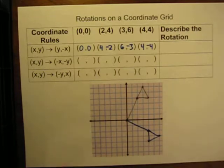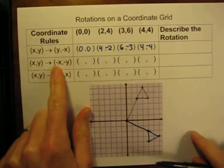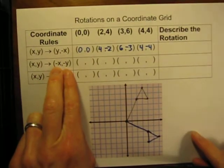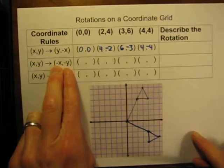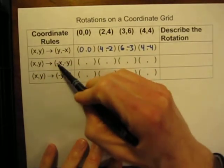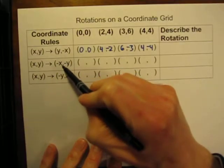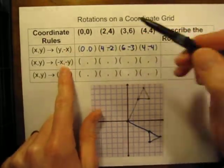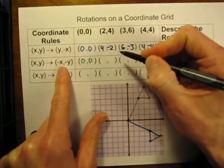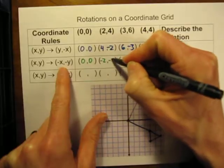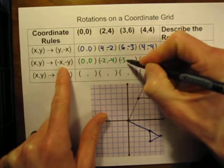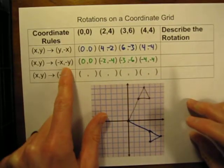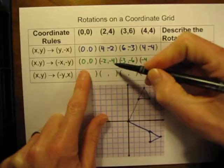Let's move to the next rule. The second rotation follows this second rule: any point (x, y) — we leave the coordinates in the same order, but we change the sign of both numbers. Again, it doesn't necessarily mean both signs will be negative; it means we do the opposite to whatever sign it was originally. Applying this to our points: (0,0) remains (0,0). (2,4) becomes (-2, -4). (3,6) becomes (-3, -6). And (4,4) becomes (-4, -4).